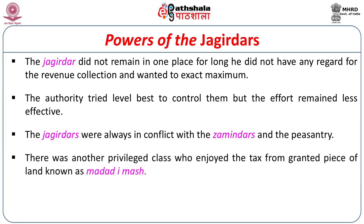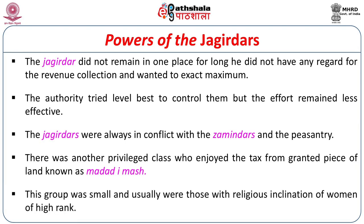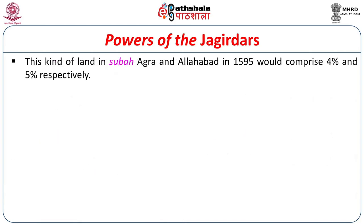There was another privileged class who enjoyed tax from a granted piece of land, known as Madad-e-Mash. This group was usually small and typically comprised those with religious inclinations or women of high rank. The kind of land in Suba Agra in 1595 comprised about 4% to 5% of Madad-e-Mash lands, so such lands were not very extensive.